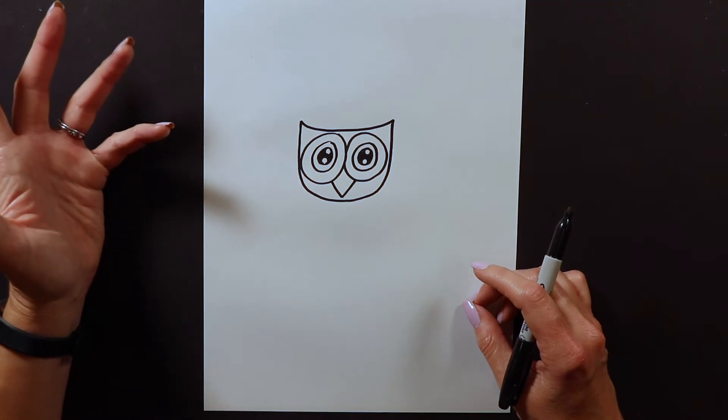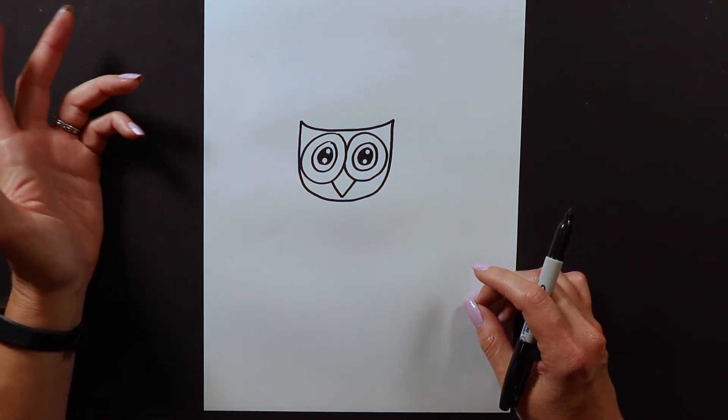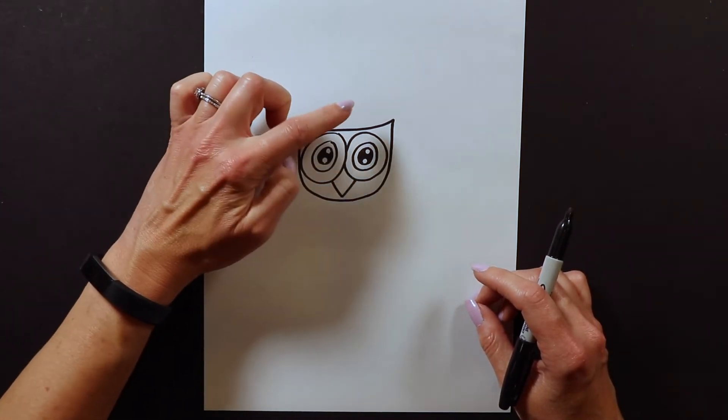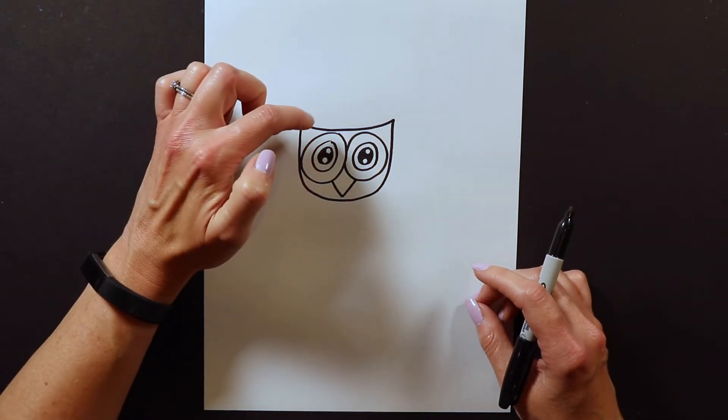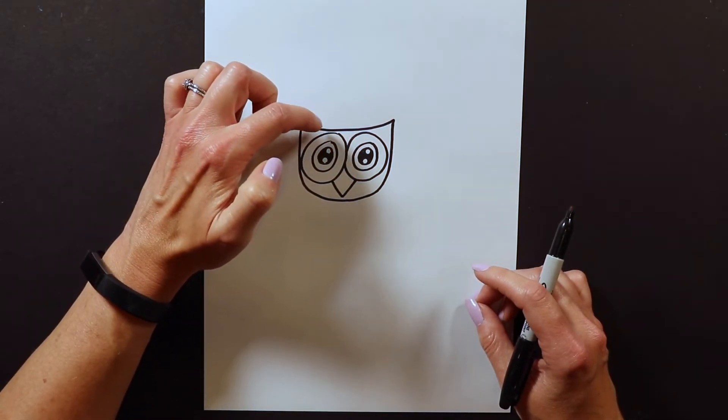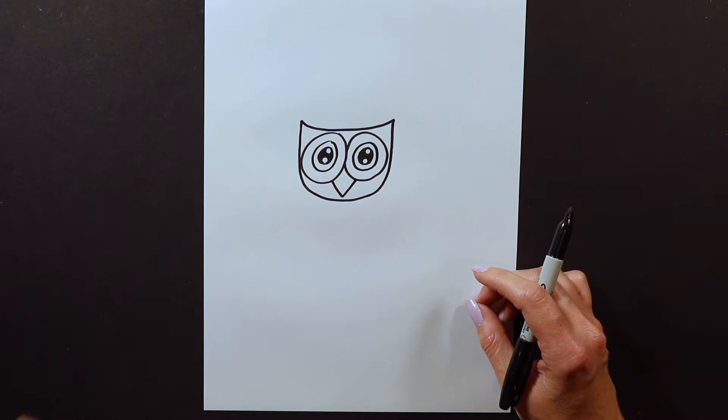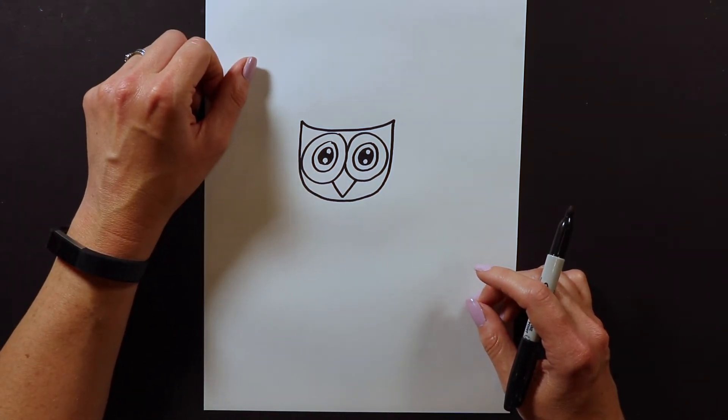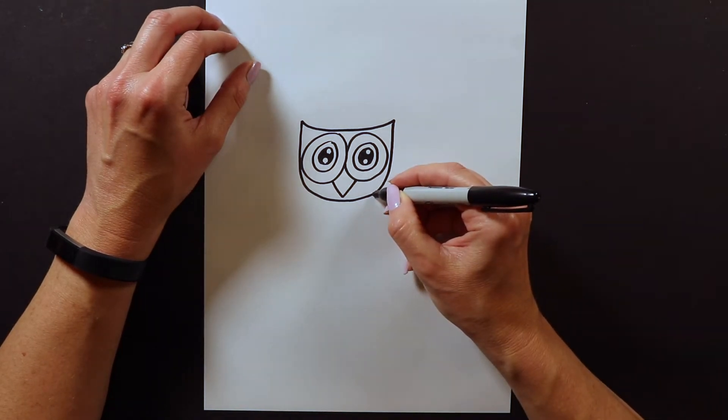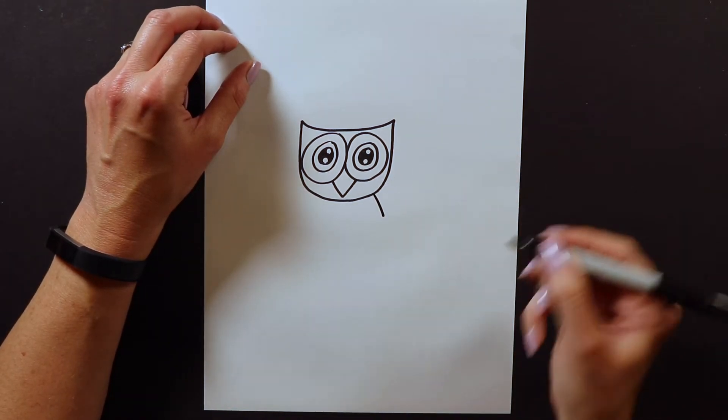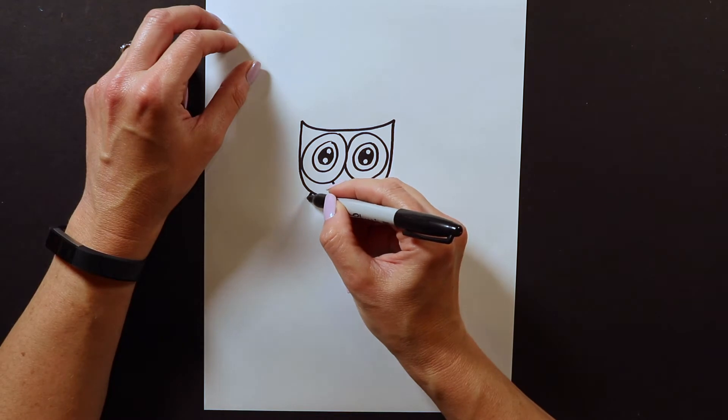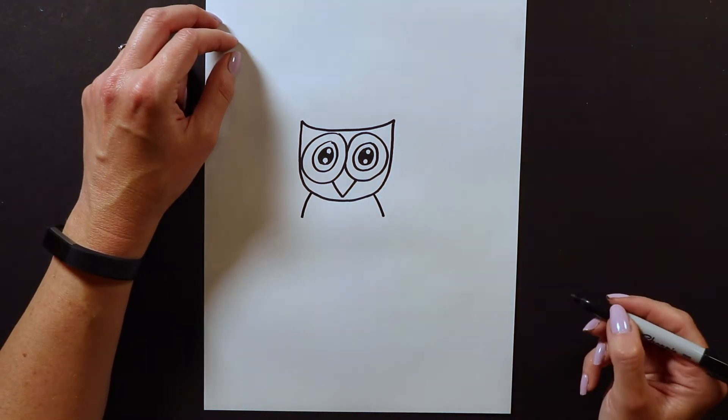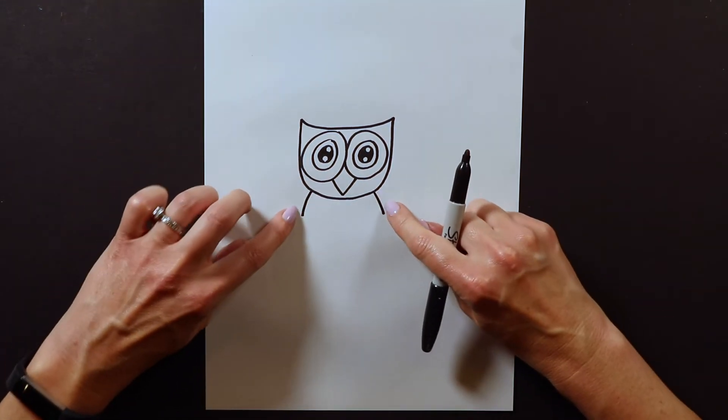If you guys want to put something extra on your owl, a lot of times I'll put like a little flower, a little birthday party hat, a tiara if you want like a princess owl. You can put something on the owl's head if you want. After we have that part done I'm gonna do just a hint at the side of the body here and just a hint at the side of the body there. So just two curved lines coming down.